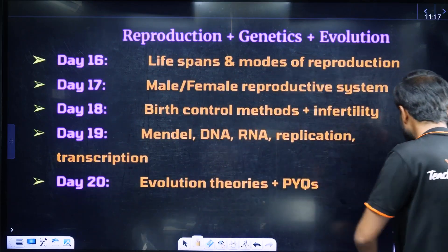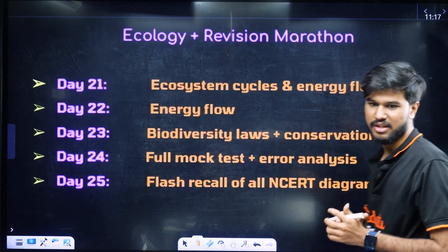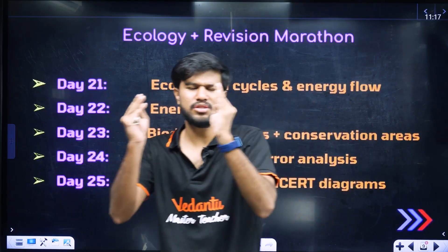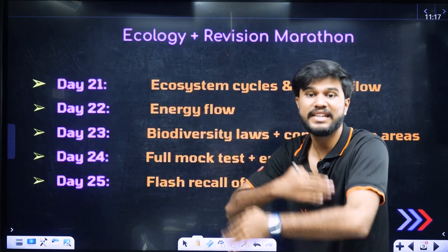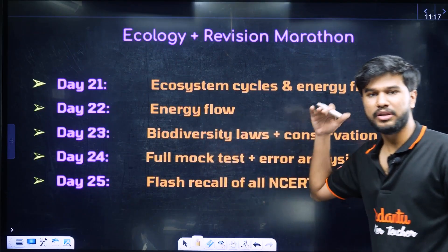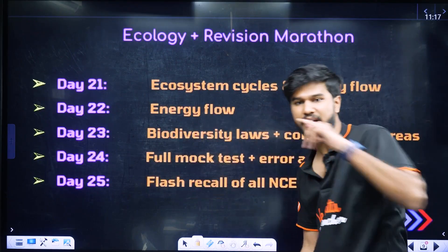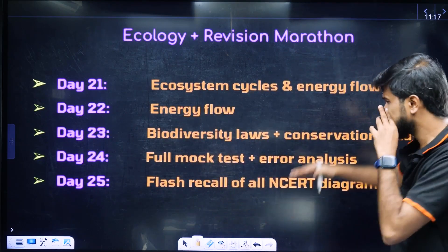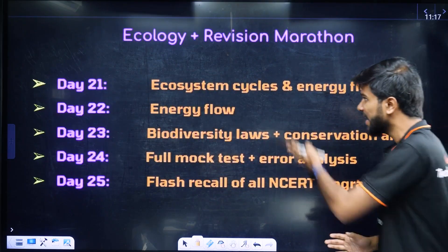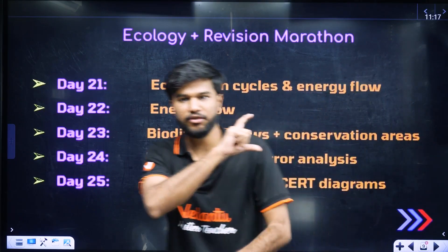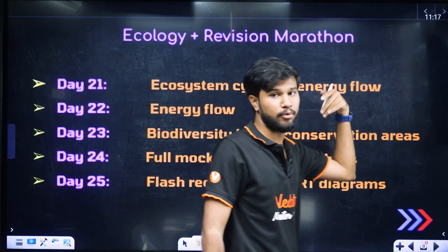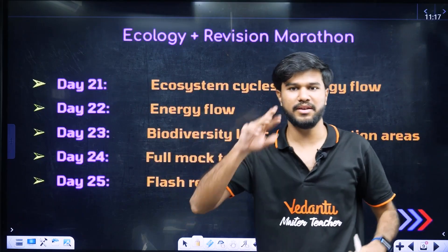Now we are going to finish phase 4 and phase 5. In phase 5, we cover ecosystem, ecology revision — ecology is very easy. You need to take an NOC test and study energy flow and biodiversity. You can study botany and sociology alongside biology.